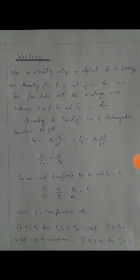Now we will discuss the working. When an alternating voltage is supplied to the primary, an alternating flux phi is set up in the core. The flux links both the windings and induces an EMF, EP and ES in them.